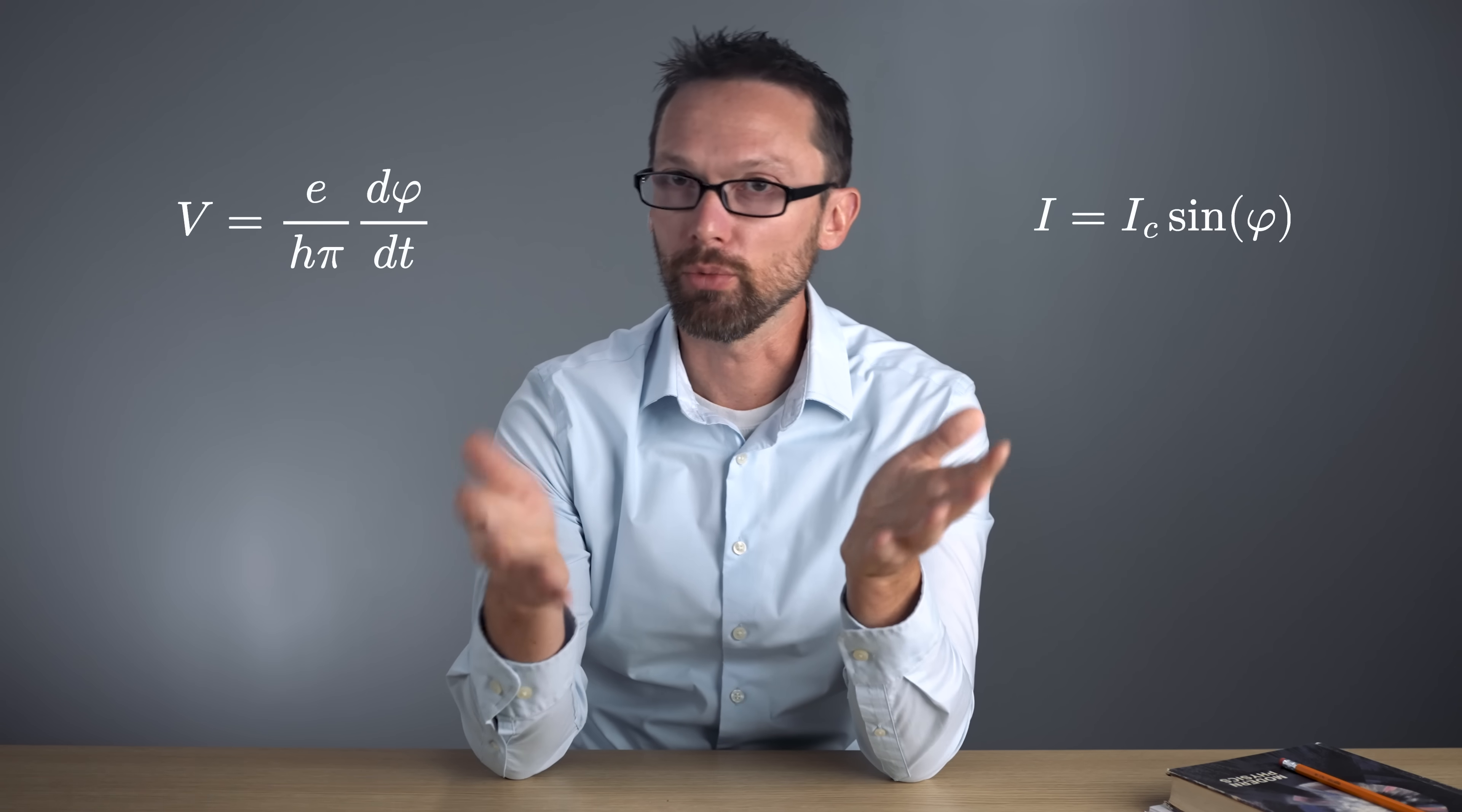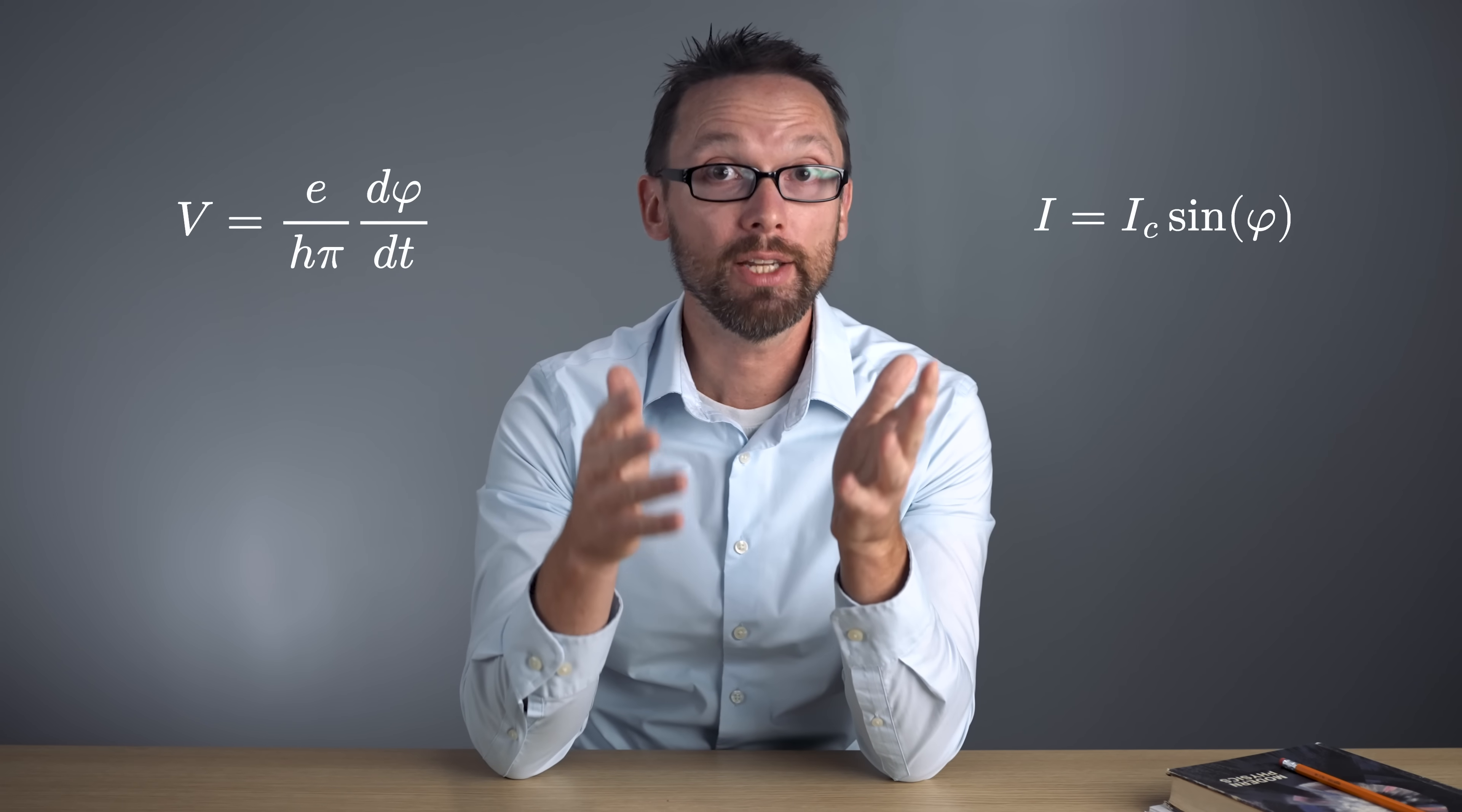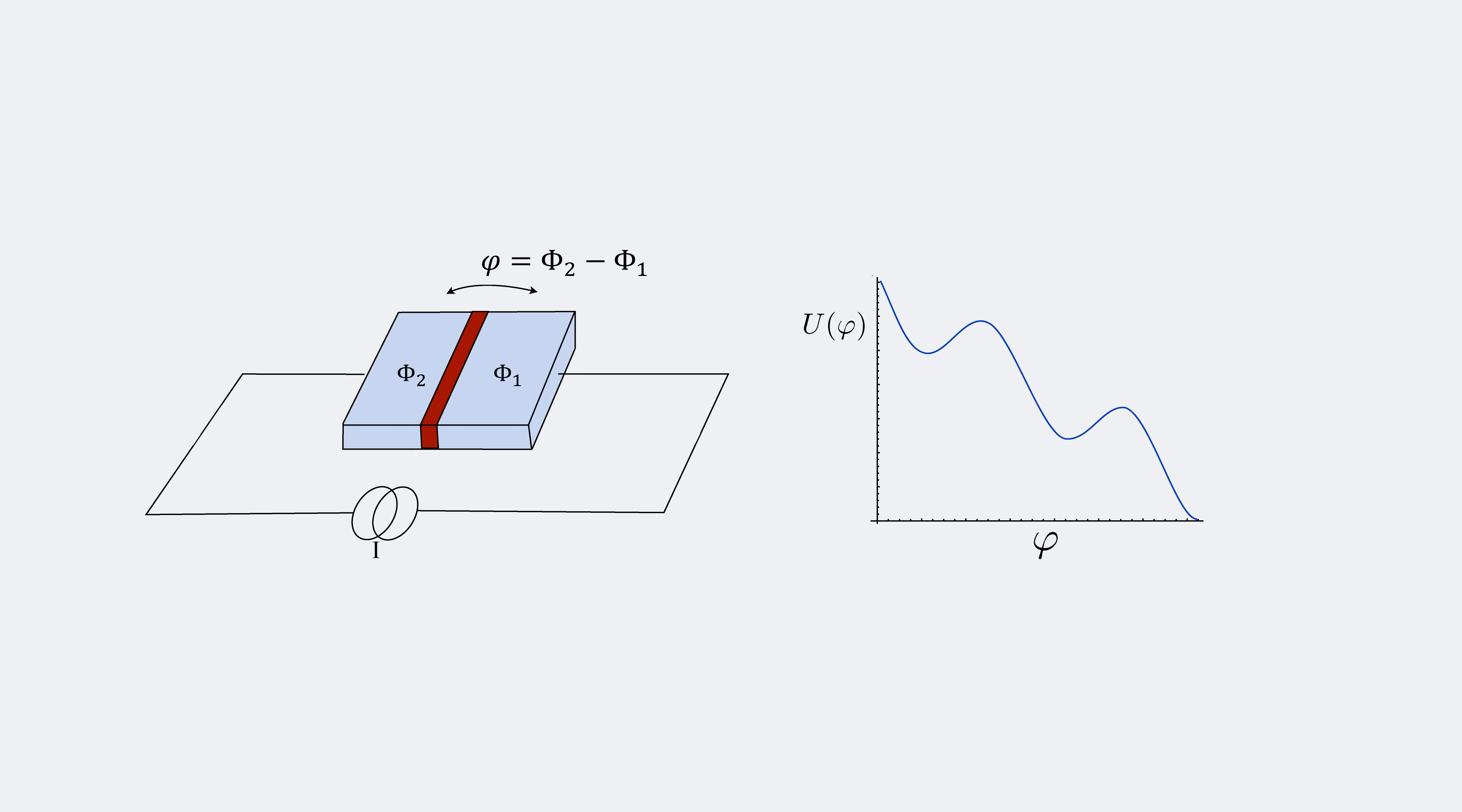And this is where the current-biased junction becomes really important. When you bias the junction with a current, it follows two simple equations called the Josephson relations, which tie the current and voltage to the superconducting phase, phi. Using these, one finds that the energy of a current-biased Josephson junction depends on phi according to this tilted washboard potential.